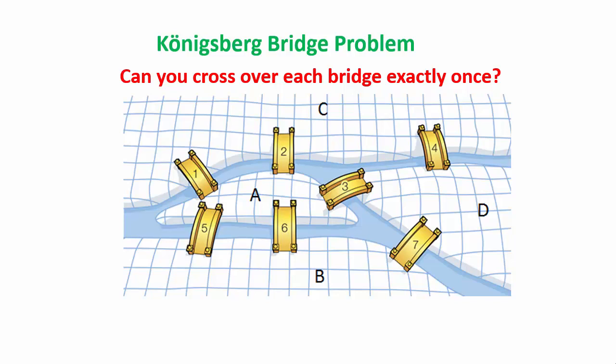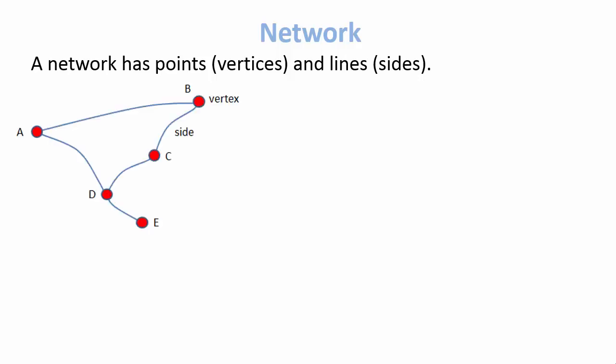We'll find out the answer to this problem later. We need some definitions first. The first one is a network. What is a network? Basically, it's a two-dimensional shape consisting of points or vertices, as we call them, and lines or sides. Here's an example. How many vertices are there, the red dots, and how many lines or sides? There are five vertices and five sides.